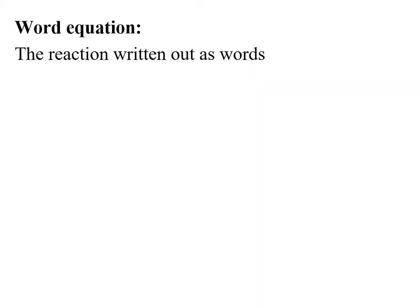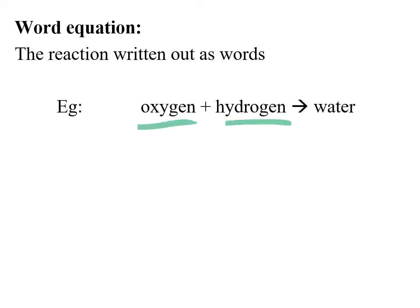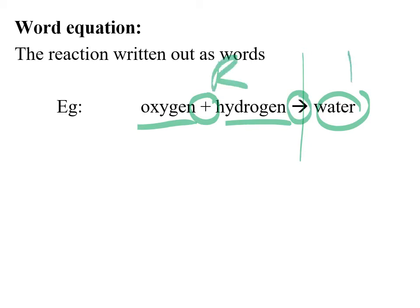A reaction can be given to you in words. You can sort of say it as a sentence and write it down as a word equation, where you're stating what the things are in words and what they become. We separate the species on one side with plus signs and have the two halves of the reaction separated by an arrow — a 'goes to form' arrow — that separates the reactants from the products.